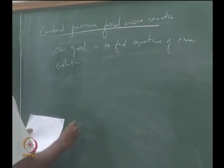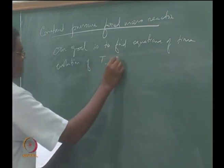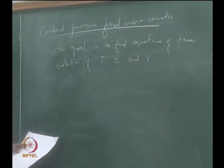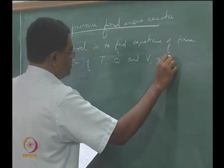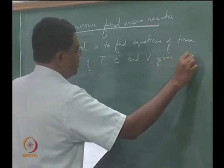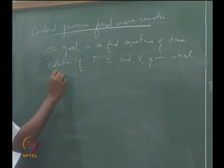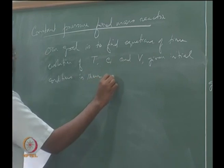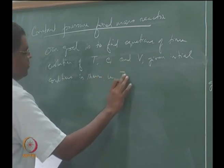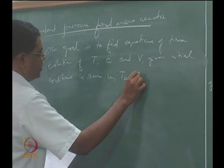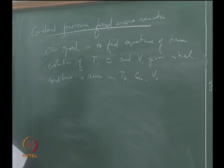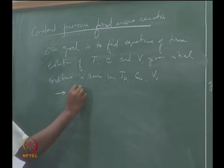Our goal here is to find the evolution of T, C_i, and V given initial conditions T0, C_i0, and V0. This is what is called an initial value problem, or IVP.